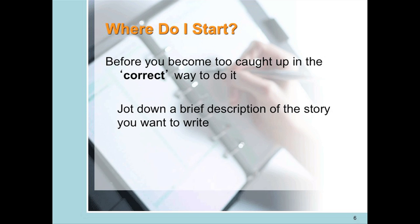But you stop and ask yourself, where do I start? You've read or heard that there is a proper way to do things. But before you become too caught up in that quote-unquote correct way to do it, first jot down those thoughts and write a brief description of the story you want to write. You're going to have the director, the cast, the editor, and the production crew who all have to read your script and interpret that outline — your story — in their own way as it's filmed.